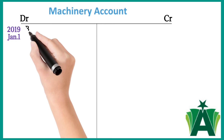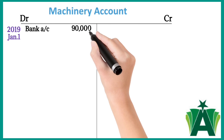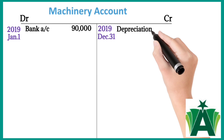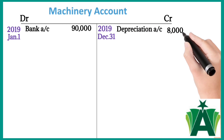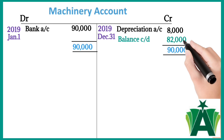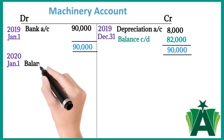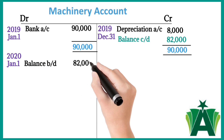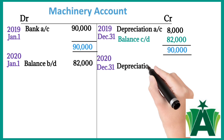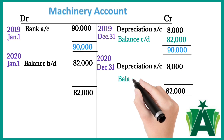Machinery Account: January 1st 2019 — debit entry with reference to Bank Account, $90,000. December 31st 2019 — credit entry with reference to Depreciation Account, $8,000; closing balance of Machinery Account is $82,000. January 1st 2020 — opening balance $82,000. December 31st 2020 — credit entry for Depreciation Account $8,000; closing balance of Machinery Account is $74,000.